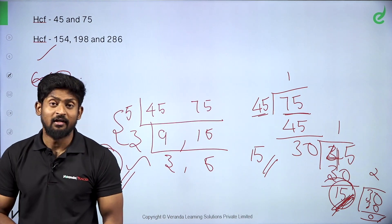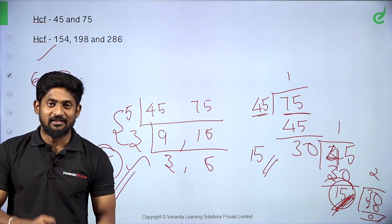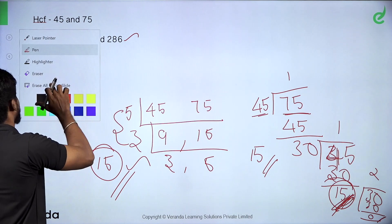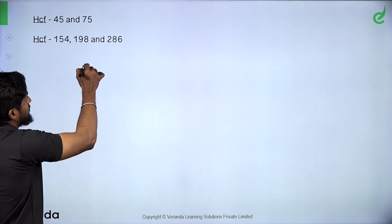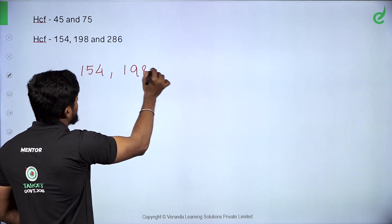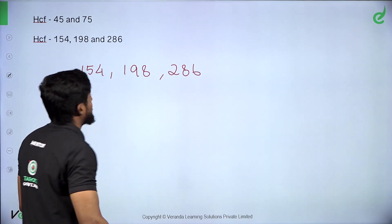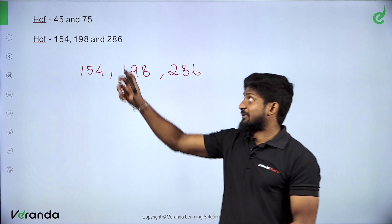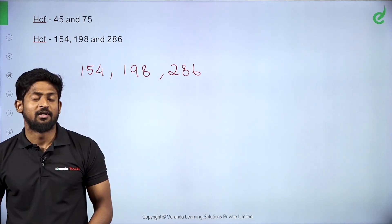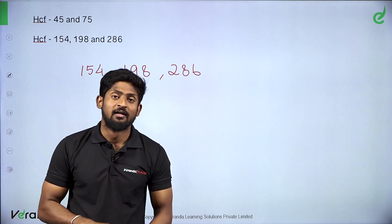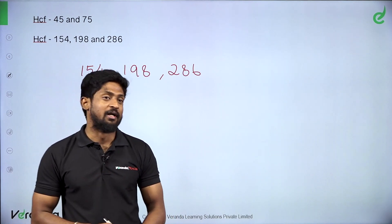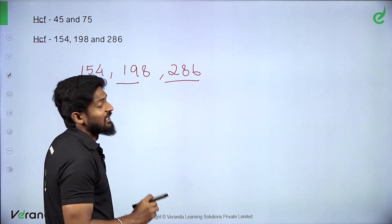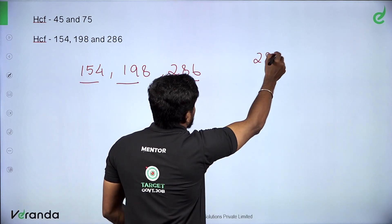You can solve for HCF this way. Now let's try another example: find the HCF of 154, 198, and 286. We divide through the same method.